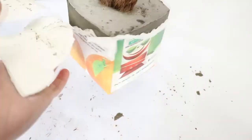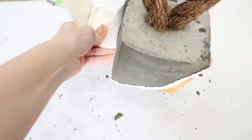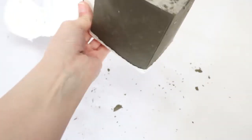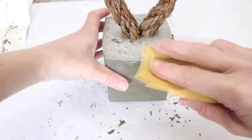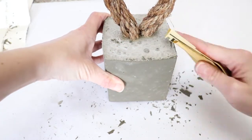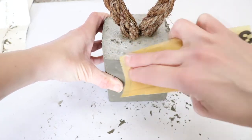Now at this point your concrete is still going to be pliable. It's not fully dry. This is a great time to take a piece of sandpaper and just rub down those edges. You can round them off and take off any rough spots that you don't like.